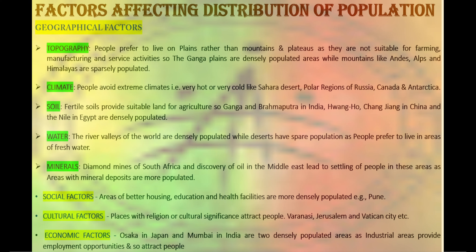Fertile soil provides suitable land for agriculture and as a result those areas are the most densely populated, for example the Ganga and Brahmaputra in India, Changjiang in China and the Nile region in Egypt. People prefer to live in areas where fresh water is easily available — river valleys are true examples of dense population while deserts have sparse population. Regions with mineral deposits are more populated, like the diamond mines of South Africa; similarly, the discovery of oil in the Middle East led to the settling of people.